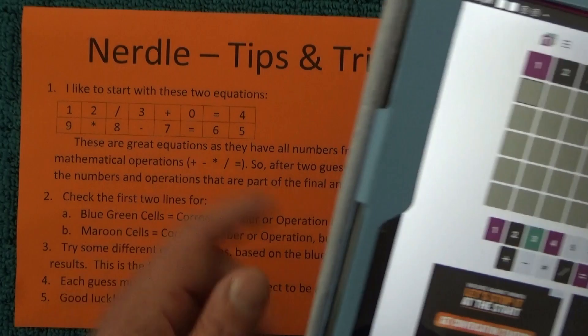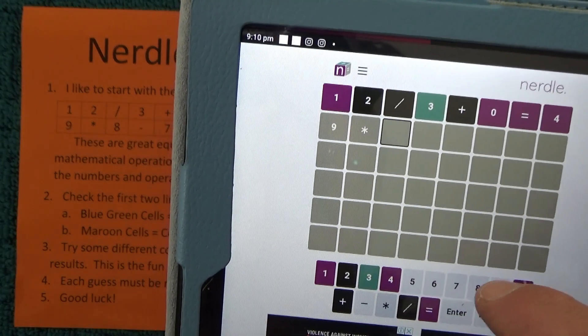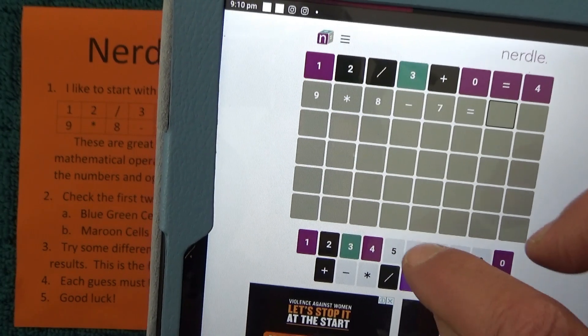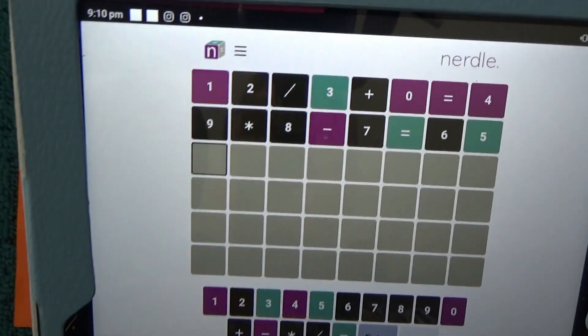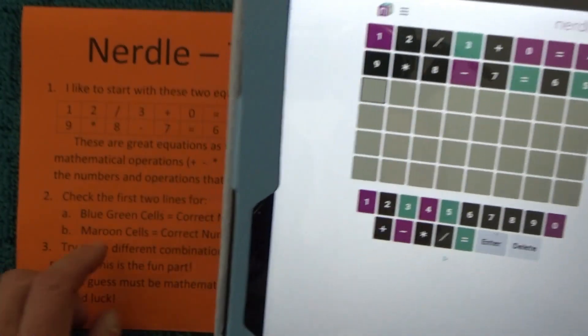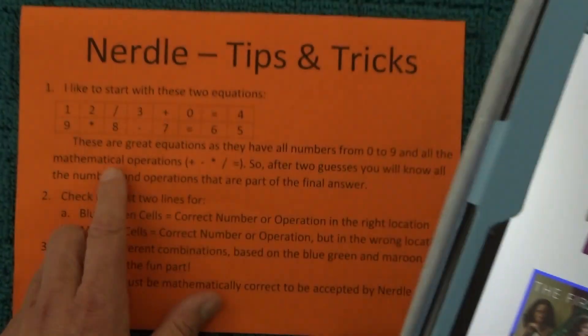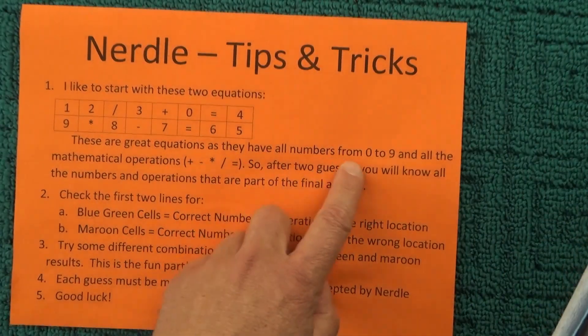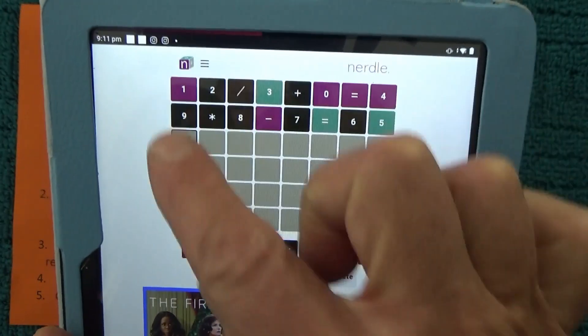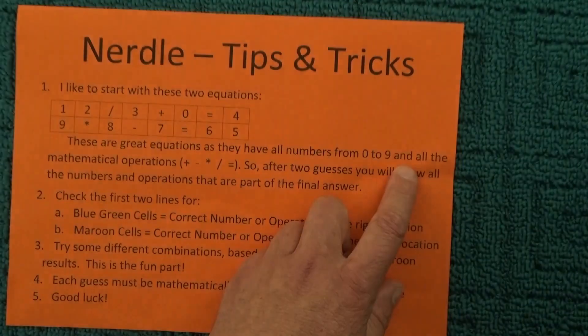And then the second equation that I like to start with is 9 times 8 minus 7 equals 65, and enter. And with these two equations, they're great equations as they've got all the numbers from 0 to 9. So you can see there I've used all the numbers from 0 to 9 in those two equations.